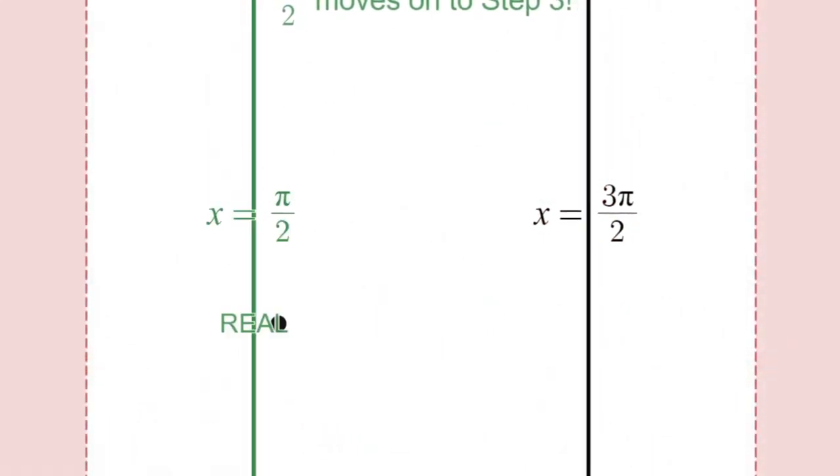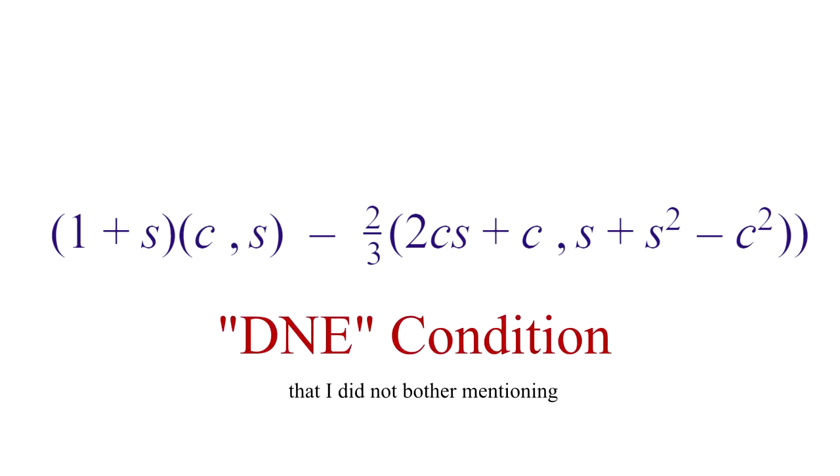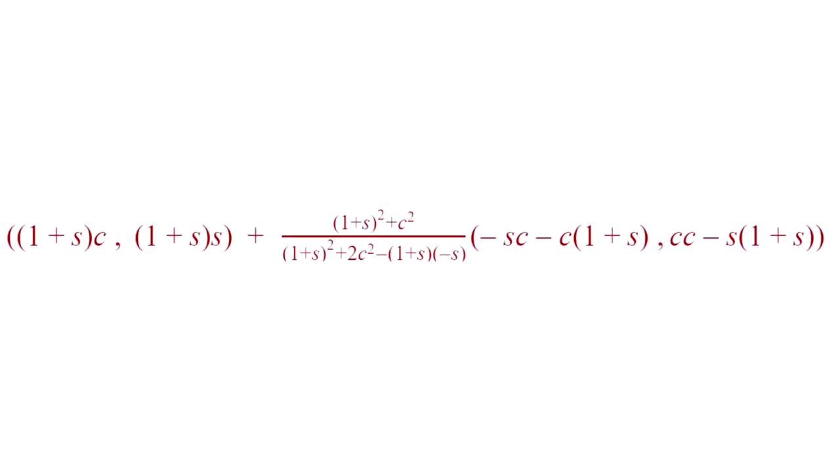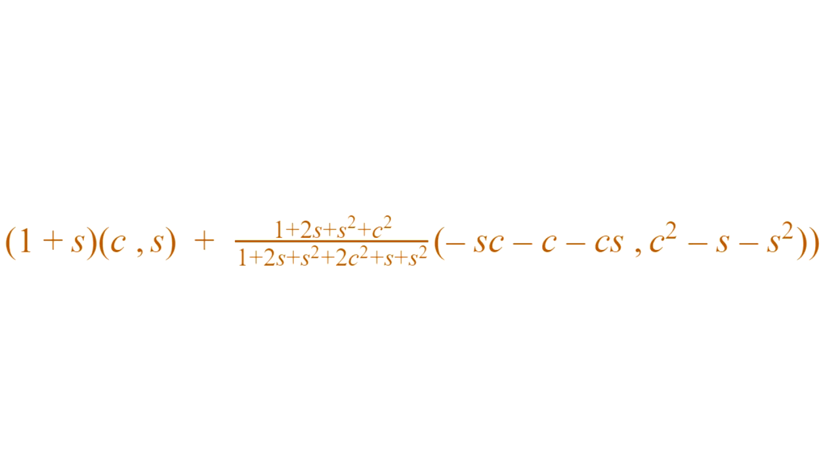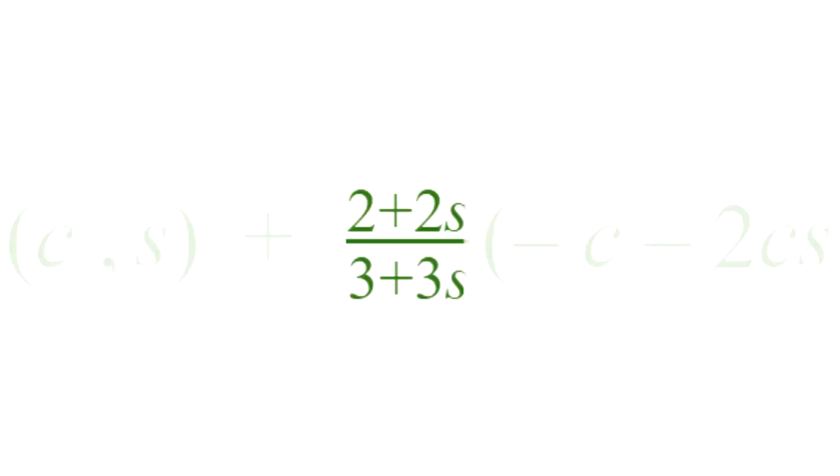Well, other than 3 pi over 2 being a fake solution, the cardioid's evolute parameter actually has a does not exist condition that I did not bother mentioning. Here's what I mean. When I was simplifying the evolute parameter, there was a time when a fraction was 2 plus 2s over 3 plus 3s.